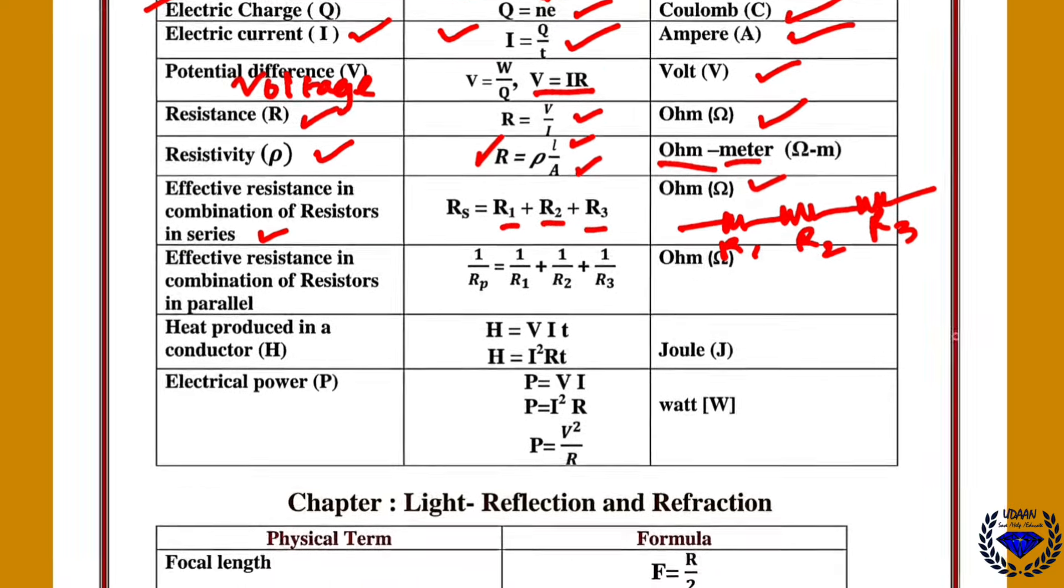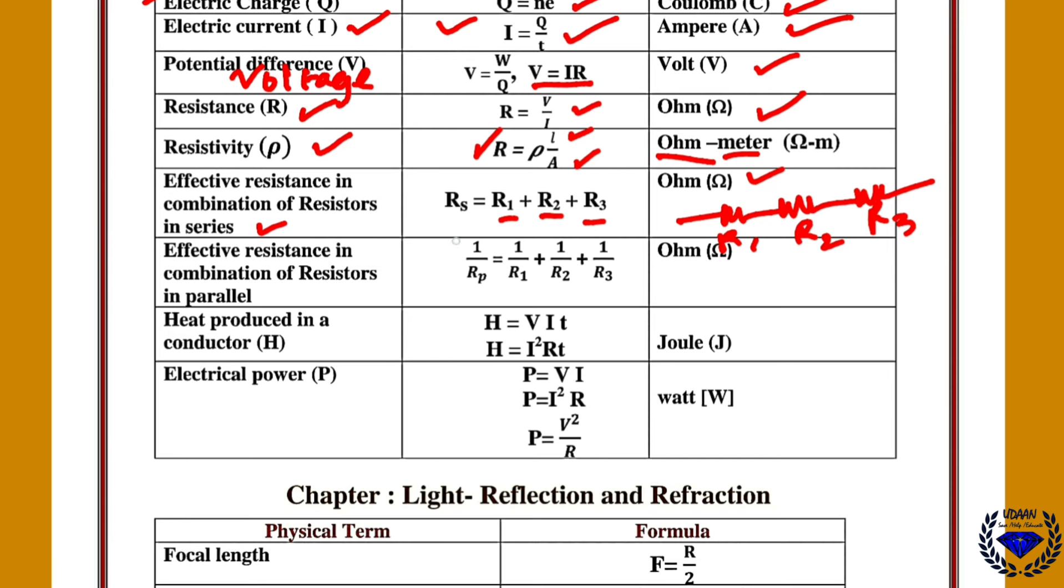Similarly effective resistance in parallel. That is 1 upon Rp is equal to 1 upon R1 plus 1 upon R2 plus 1 upon R3. The formula is again same, it is resistance therefore Ohm.